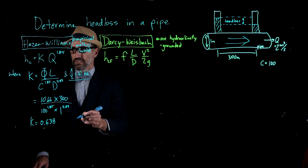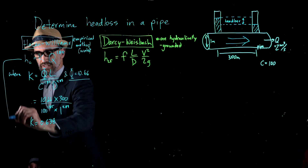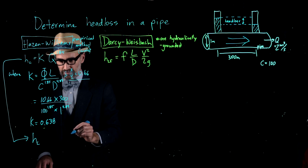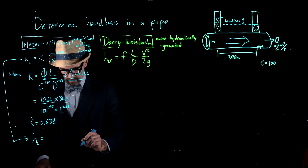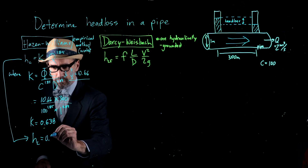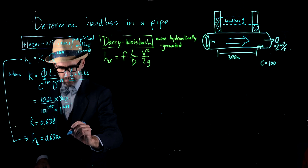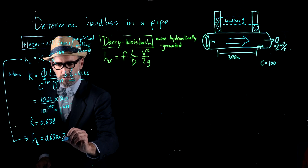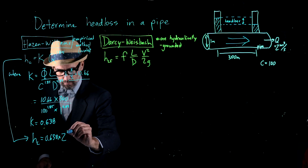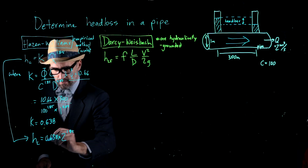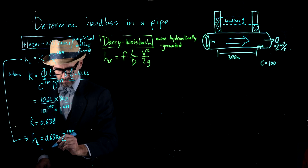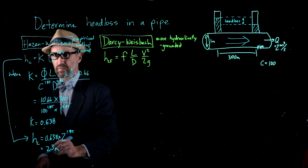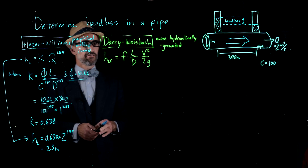We can substitute that into the equation to solve for head loss using the Hazen-Williams methodology. The head loss equals 0.638 multiplied by the flux Q to the exponent 1.85, which results in a head loss of 2.3 meters. That's our first calculation of head loss.